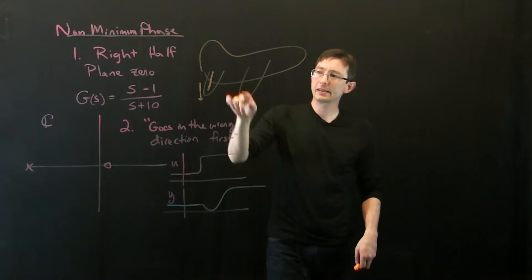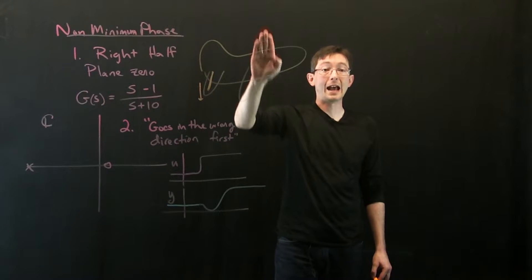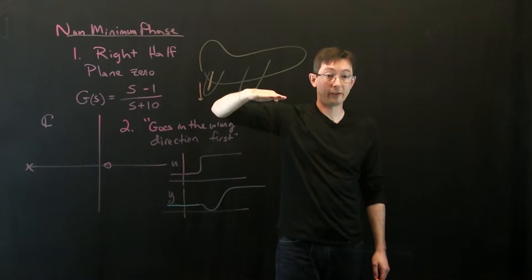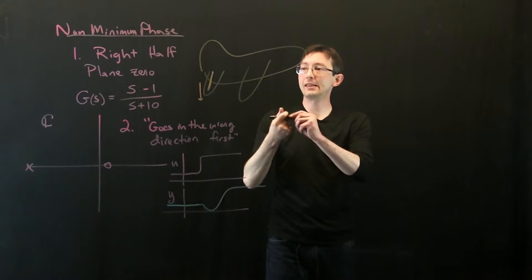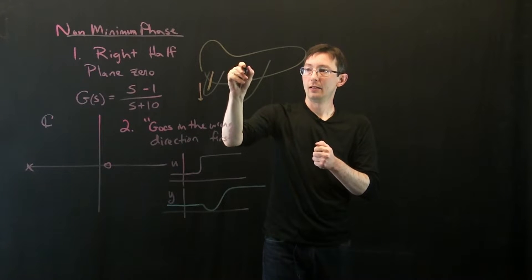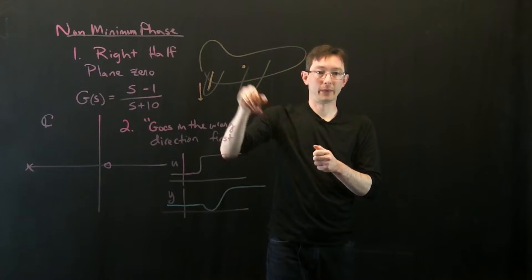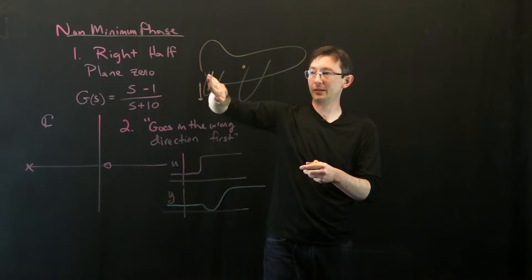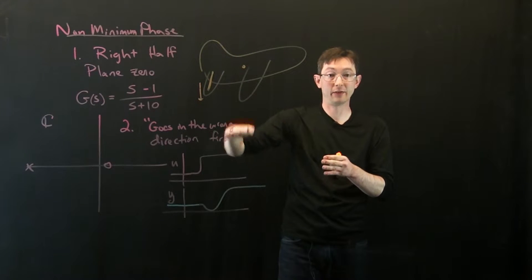But notice that before the center of mass can actually go up, before I get that positive high angle of attack, my center of mass actually went down, right? Because I basically kicked my elevator to push the tail of the plane down.